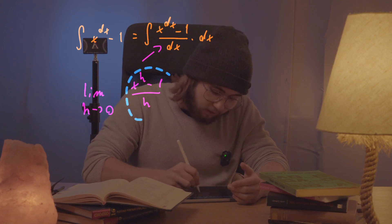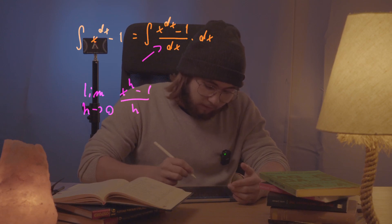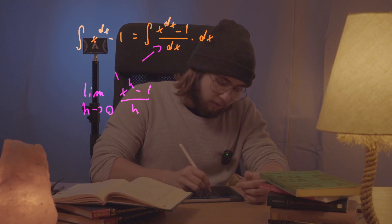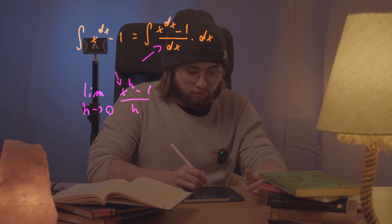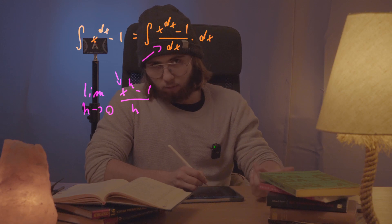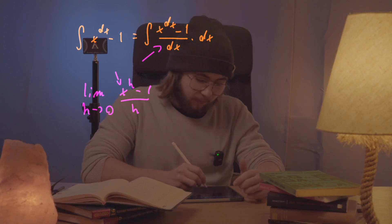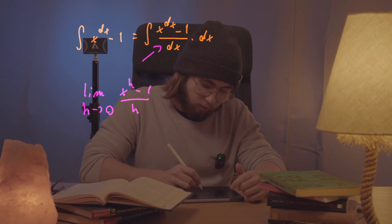And so what is this limit equal to? I mean, as h approaches zero, the x to the power of h is going to be one. So this one minus one is going to be zero. However, well, the denominator is also going to be approaching zero. And so we're going to have the situation where we have zero over zero.